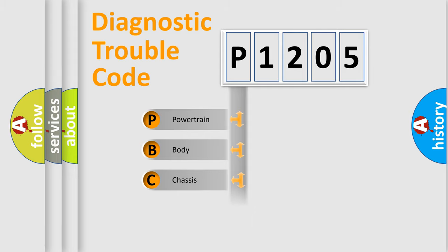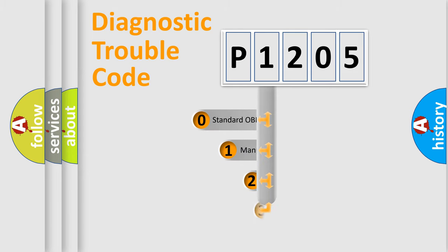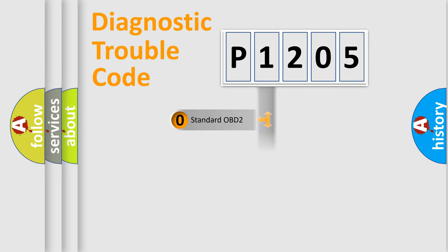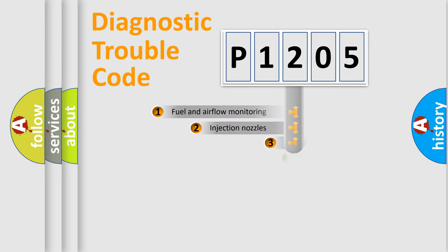We divide the electric system of an automobile into four basic units: Powertrain, Body, Chassis, and Network. This distribution is defined in the first character of the code. If the second character is expressed as zero, it is a standardized error. In the case of numbers 1, 2, or 3, it is a more specific expression of a car-specific error.